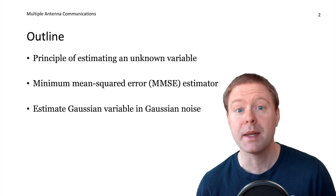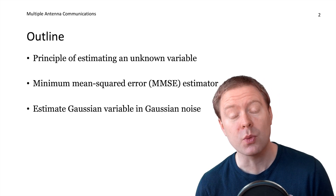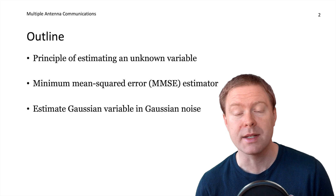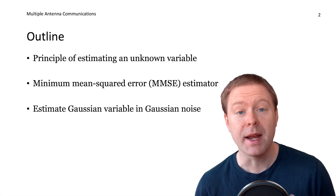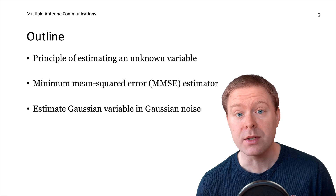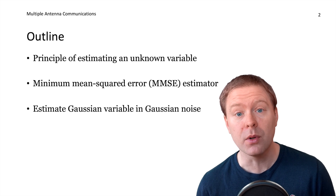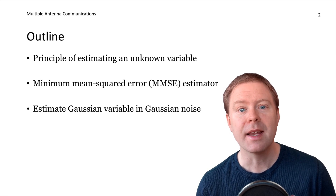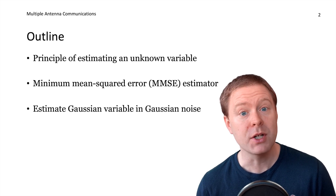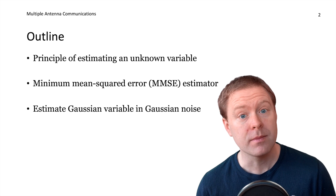In particular, we will talk about the minimum mean squared error estimator, and I will exemplify its behavior when we are estimating a Gaussian random variable or its realization in Gaussian measurement noise.